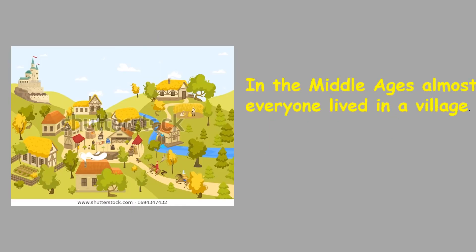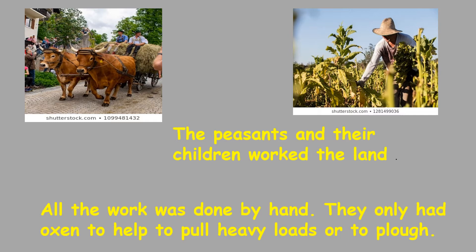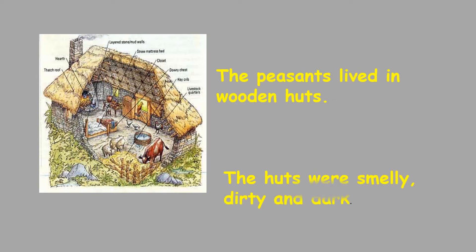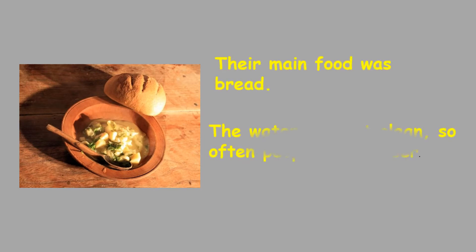In the Middle Ages, almost everyone lived in a village. Each villager farmed his land. The peasants and their children worked the land, and all the work was done by hand. They only had oxen to help pull heavy loads or to plough. The peasants lived in wooden huts. The huts were smelly, dirty and dark. Their main food was bread, and the water was not clean, so often people drank beer instead.